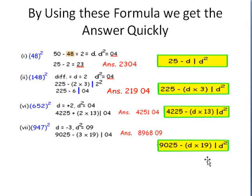Friends, now your question must be: how did all this happen? So let us know one by one how the answer came. We will be doing some formulas to show how we got the answer so quickly. The formula for a number nearer to 50 will be 25 minus D, and D square written at the end. For a number nearer to 150, we write 225 minus 3 into D, and then D square, and so on.